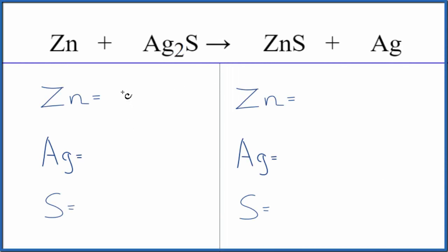So in this single displacement reaction we have zinc plus silver sulfide. To balance it let's count the atoms up on each side of the equation.